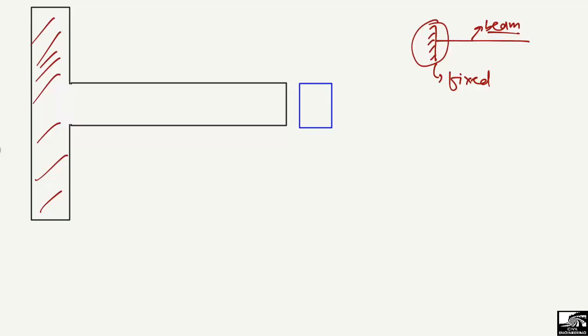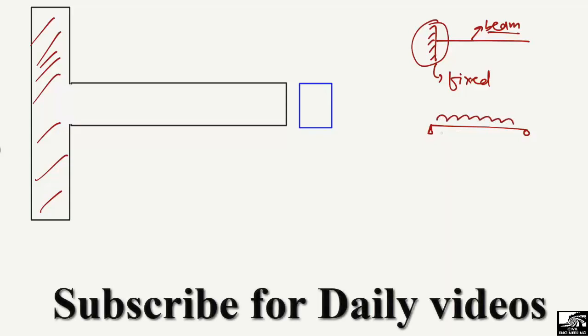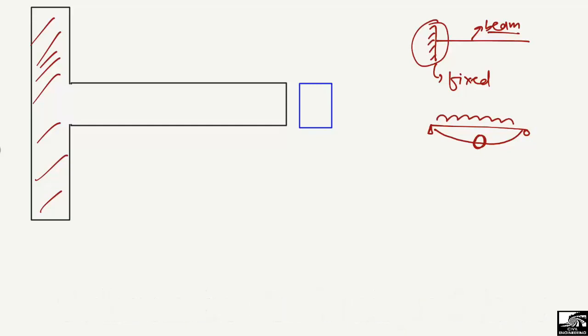We provide reinforcement in the beam to take the tension load. For example, in a simply supported beam when a load acts on it, the bending moment diagram shows maximum tensile stresses at the bottom part of the beam. Because concrete is weak in tension, we provide reinforcement bars. Looking at the cross section, we place the main reinforcement at the bottom of the beam to take this tension.